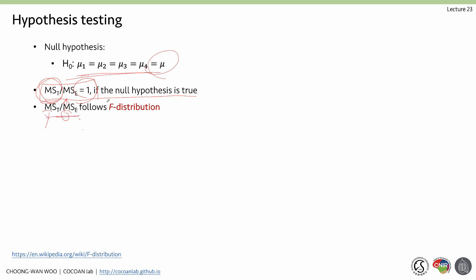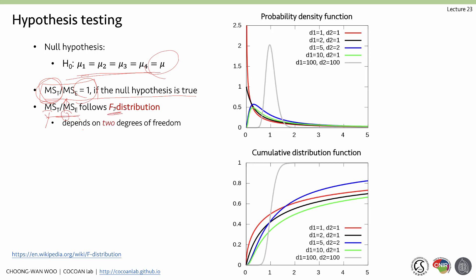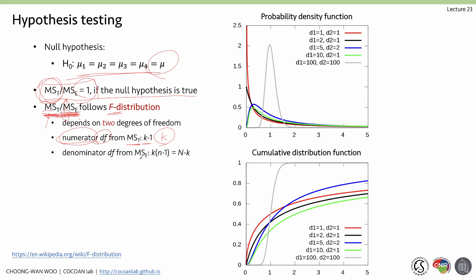This ratio follows an F-distribution, which depends on two degrees of freedom: numerator and denominator. The numerator df comes from the treatment mean square: k − 1, where k is the number of groups. The denominator df comes from MSE: n − k, which is the total sample size minus the number of groups. In our example with four groups and 32 samples, df1 = 3 and df2 = 28.